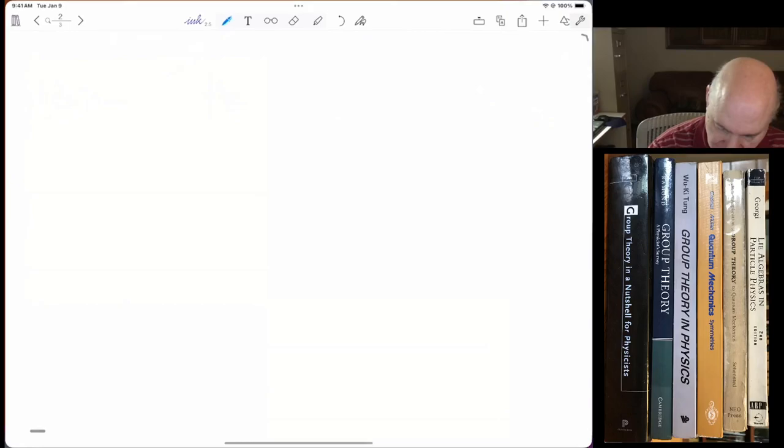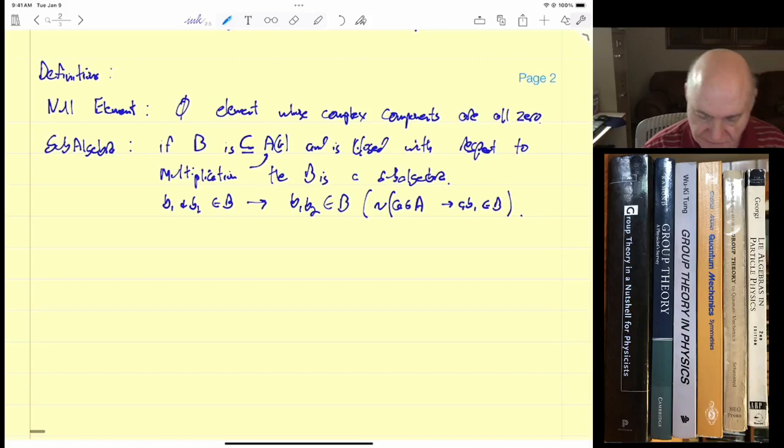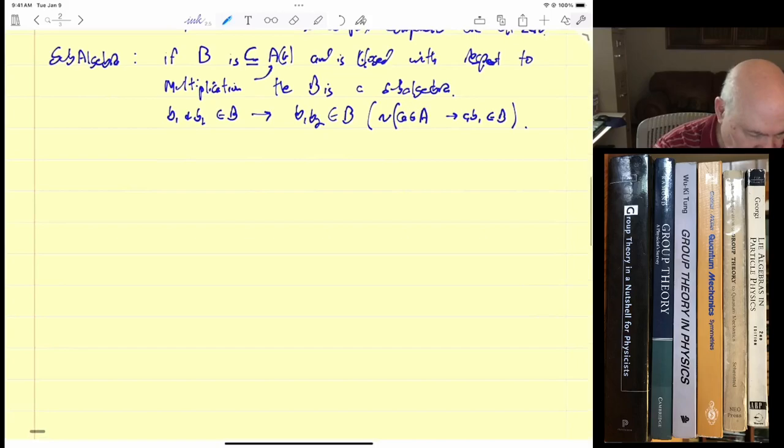Now it's important to distinguish. Sorry about that. It's important to distinguish that this means like if B1 and B2 is in B, then this implies that B1 B2 is in B. It does not imply that if A is in A, not in B, then AB1 is in B. It's only closed with respect to the elements in the group.